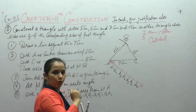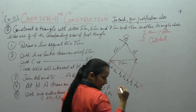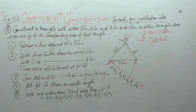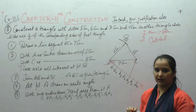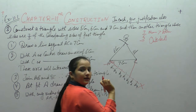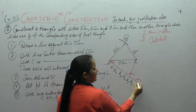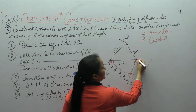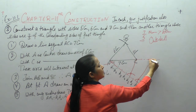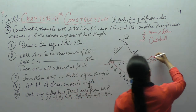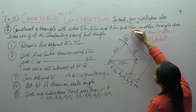क्योंकि triangle outside बननी है, तो हमारे पास value 5 है, तो हम A5 को C से मिलाएंगे। अगर inside बनती तो maximum वाली value को last point से मिलाना होता। Outside के case में minimum value 5 को मिला दिया। AC line segment को extend करके C dash नाम दिया, और AB को extend करके B dash नाम दिया।